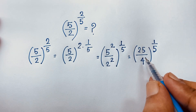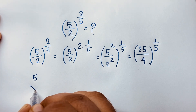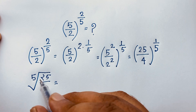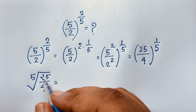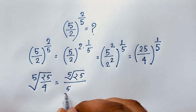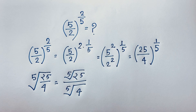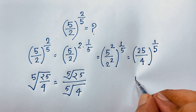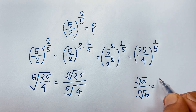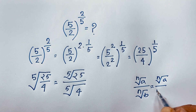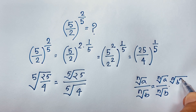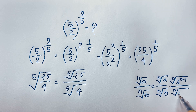So consider this expression: it will be 5th root of 25 over 5th root of 4. Now, I apply this rationalization formula: we know that n-th root of a over n-th root of b equals n-th root of a over n-th root of b, times n-th root of b to the power n minus 1.